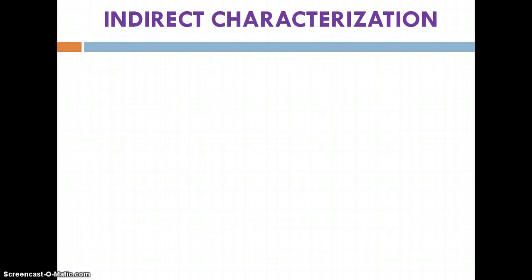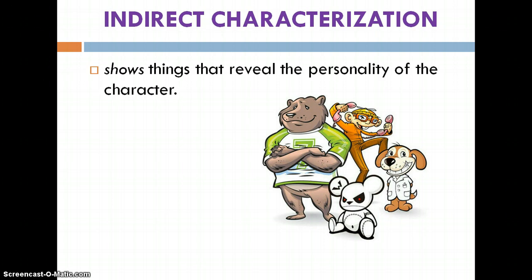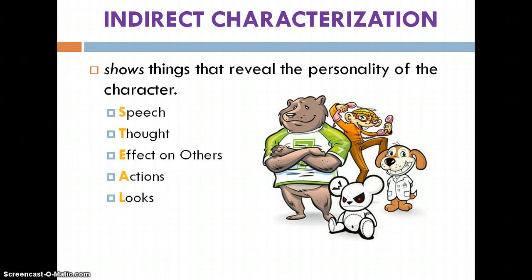Indirect characterization is much more common with professional authors. They might directly characterize a character earlier on, but mostly they're going to show things that reveal the personality because it's more interesting to read a story that way. You can remember the acronym STEAL, because it will tell you the ways indirect characterization happens: through their Speech, Thought, Effect on others, Actions, and Looks. As the author describes how they look, what they think, or the effect they have on others, these are all ways to indirectly characterize a character.